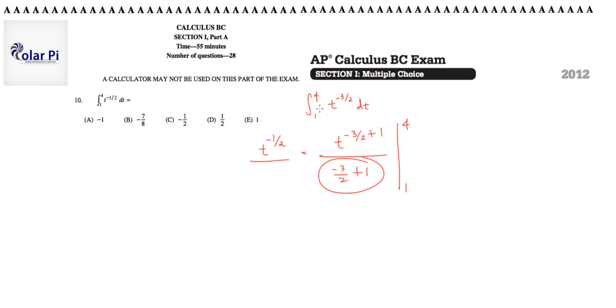Divided by, and likewise, that should be together. Negative 3 halves plus 1 should be negative 1 half. So we're really doing that evaluated at 1 and 4.